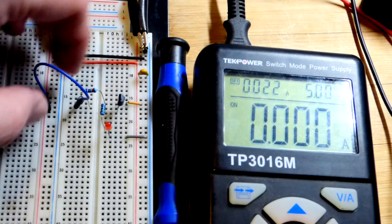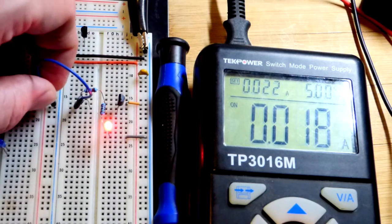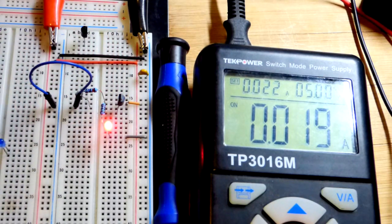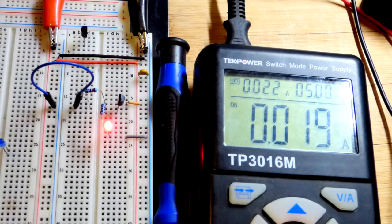Going to the positive supply right there. If we go to the negative supply, now we have a current path from emitter to base, and the transistor is on. About 19 milliamps of current total.